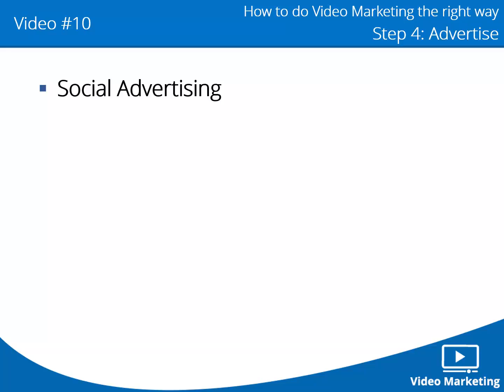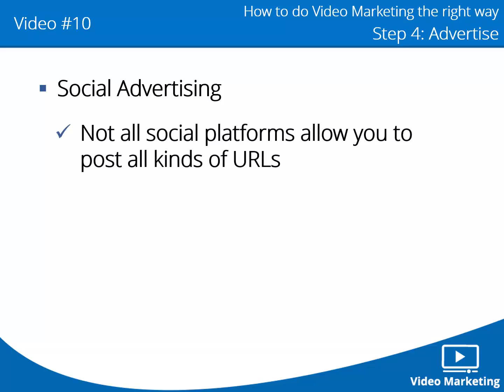Number one: not all social platforms allow you to post all kinds of URLs. Some social platforms really hate marketers placing CPA offers on their posts — even the CPA owners don't allow that. The way you might find out is by doing it and getting your account shut down. So just don't do it. That's why it is recommended to post a video redirecting them to your offer — you could buy a nice domain name and have it redirect to your CPA or affiliate offer.